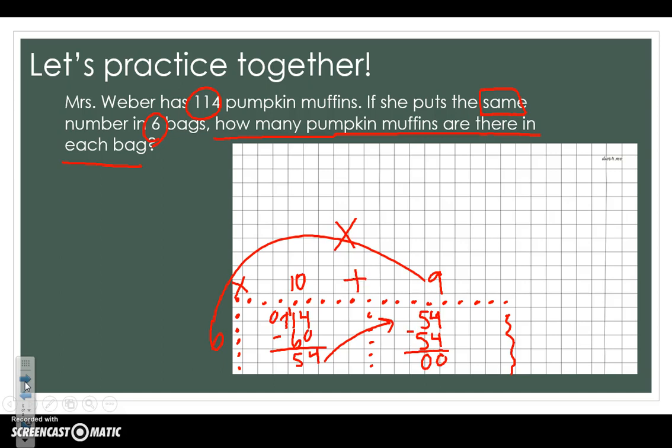Our last step is to add our numbers that we've labeled on top. 10 plus 9 we know is 19. And that gives us our answer to our division problem of 114 divided by 6 equals 19.